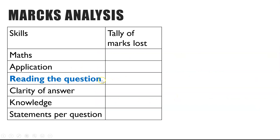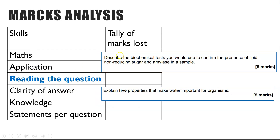Next, Reading the question. Two examples: 'Describe the biochemical tests you would use to confirm the presence of lipid, non-reducing sugar and amylase in a sample' - perhaps someone misread non-reducing sugar for reducing sugar and wrote all about that. Or 'Explain five properties of water' - you may have misunderstood 'explain' and just stated the properties rather than explaining what causes them and why they're advantageous. Any time you've misread or misunderstood the emphasis of the question, that would be tallied in that column.